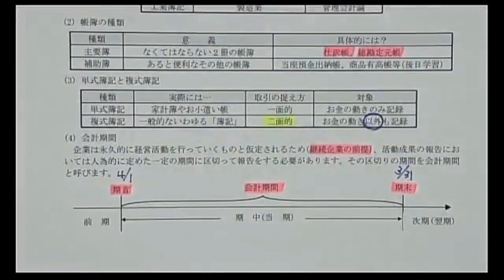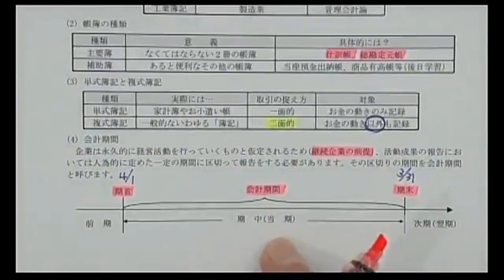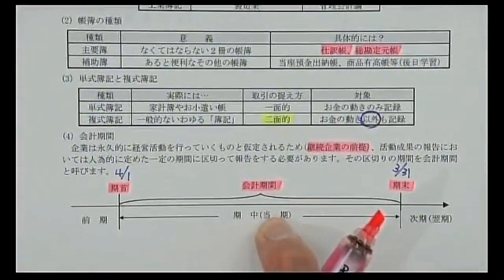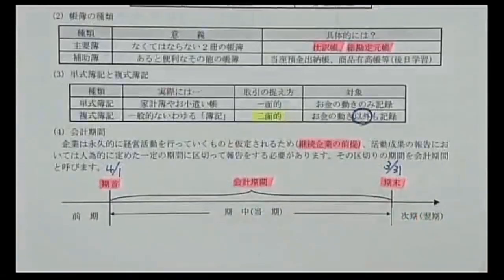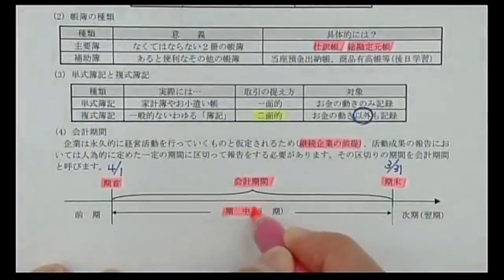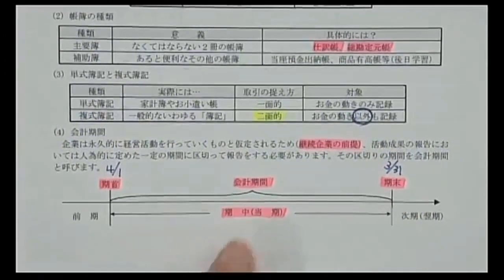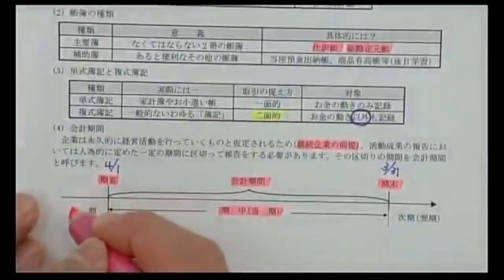会計期間は大体1年です。多くの会社は4月1日が期首、3月31日が期末です。会計期間のスタートを期首、終わりを期末と呼びます。期間の中を期中または当期と言い、1つ前の期間を前期、1つ後を次期または翌期と呼びます。